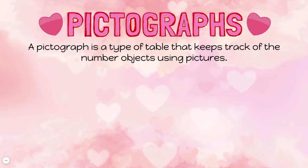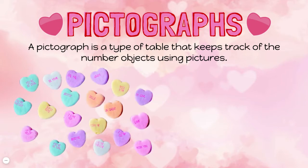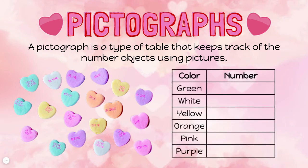A pictograph is a type of table that keeps track of the number of objects using pictures. Let's say we have 20 candy hearts. We can set up a chart to create a pictograph. I have the colors of the hearts on the left side and a space to record the number of each color on the right. Now I'm going to count how many of each color heart I have.